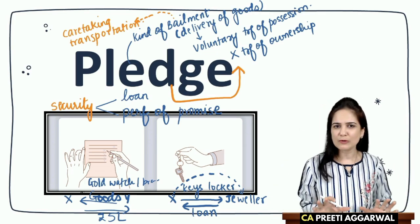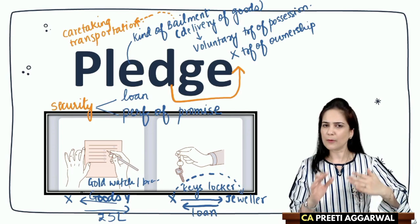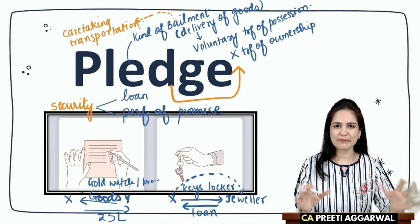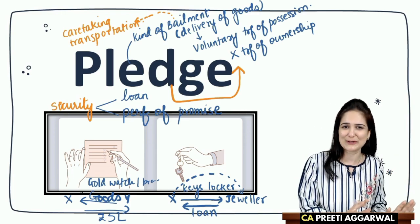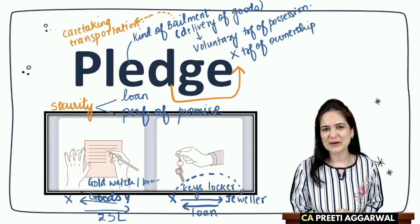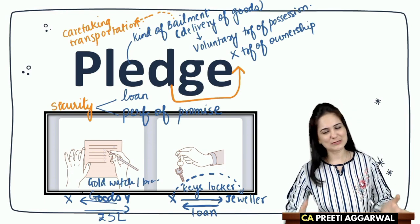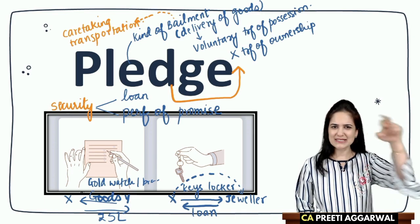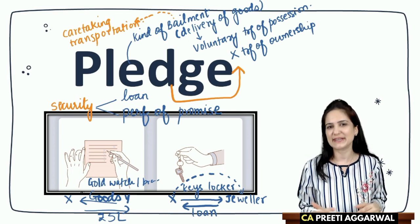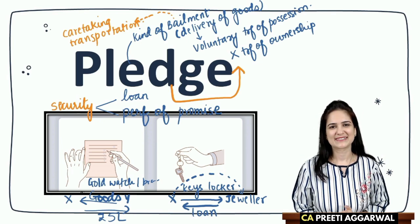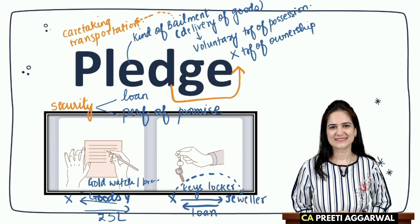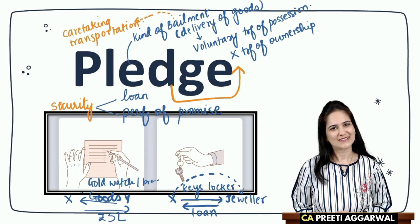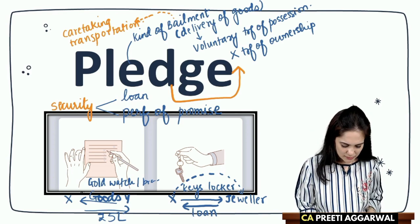Let's do a quick roundup and prepare last-minute revision notes. Pledge is a kind of bailment. Bailment involves delivery of goods; delivery means voluntary transfer of possession. Only possession is transferred, not ownership. Ownership is transferred in case of sale, not in case of pledge or bailment.